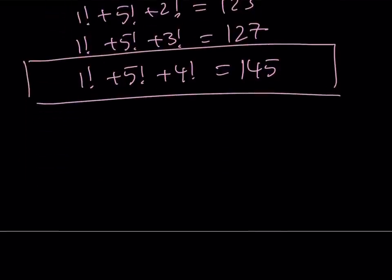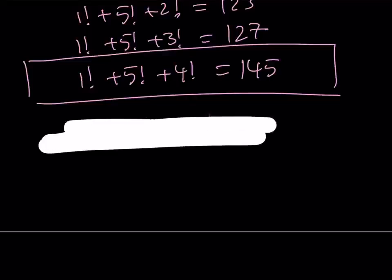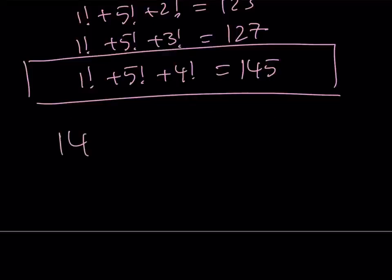Great! Of course, we can write it in a better way like this. 145 is equal to 1 factorial plus 4 factorial plus 5 factorial.